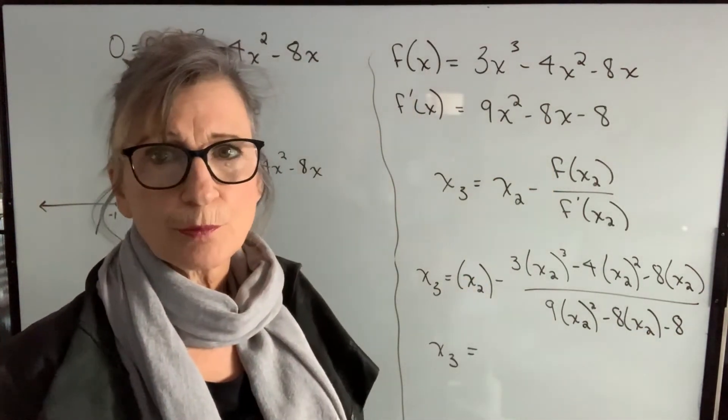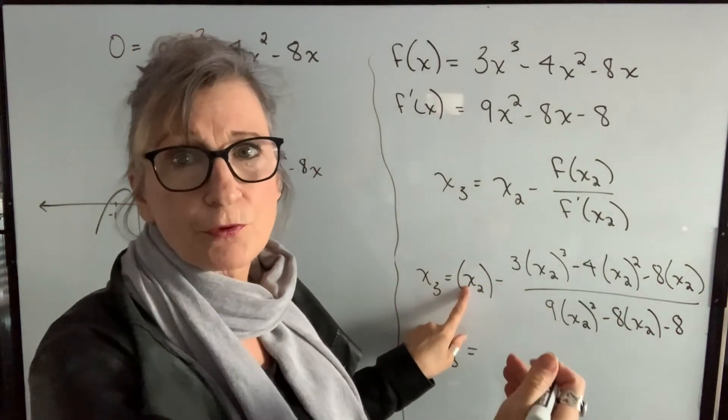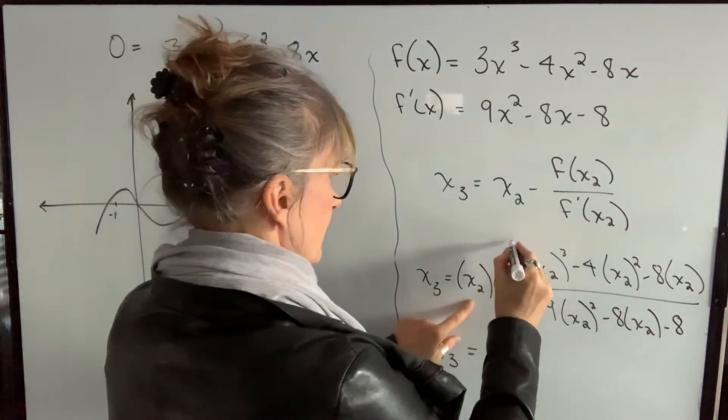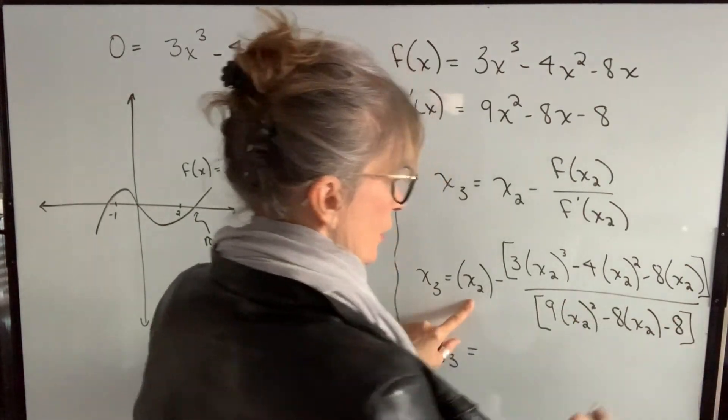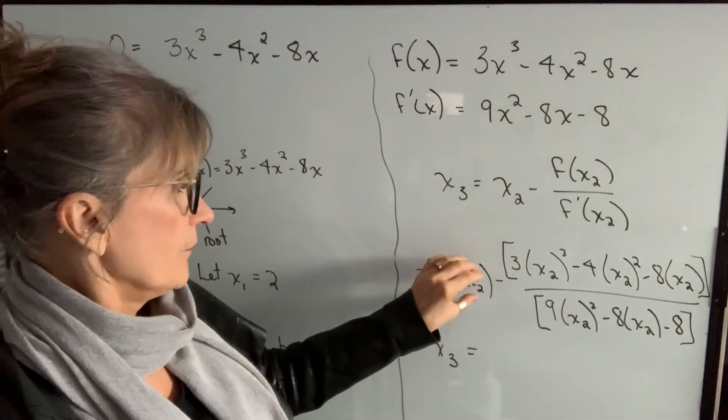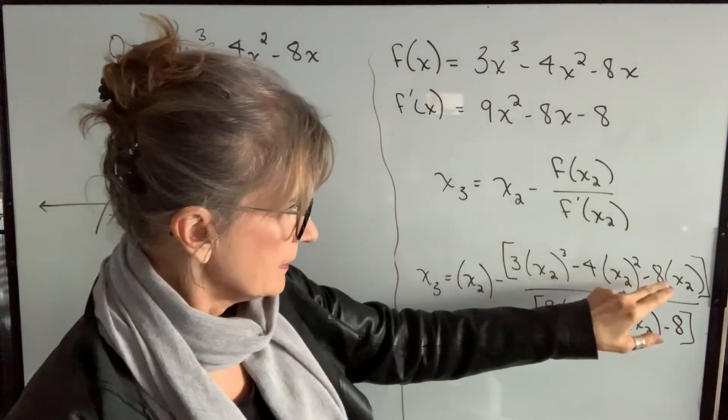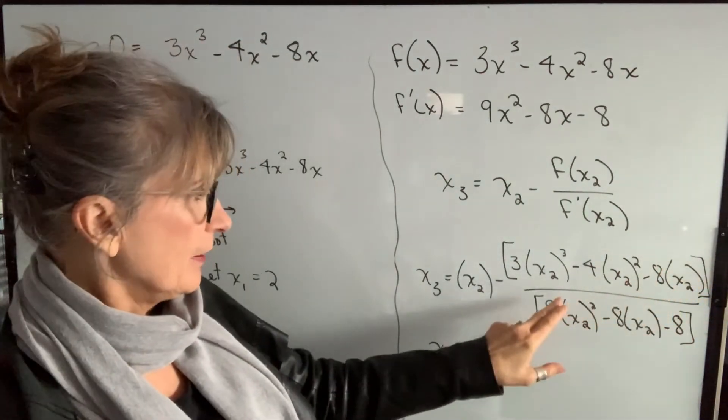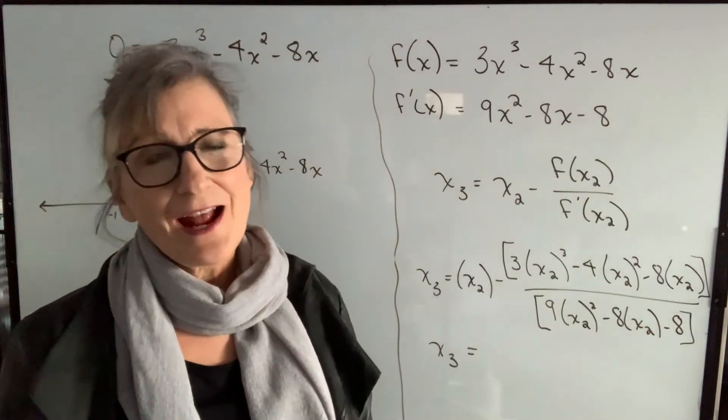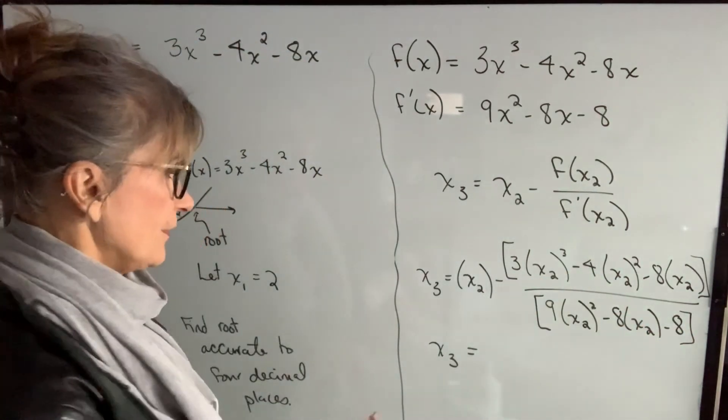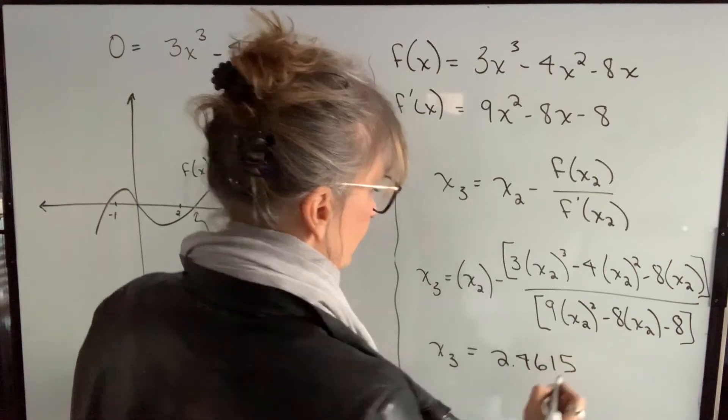And my recommendation when you're punching this in on your calculator is every time you see these brackets, you're going to be doing a recall from your memory. And I would recommend that you put brackets around your numerator and brackets around your denominator so that you can actually punch it in as memory recall minus bracket, go through all of this, end of bracket, divide by bracket, and then write this expression or do this calculation, end of bracket equals. And that should work and you should get a value of 2.4615 if you've done it correctly.